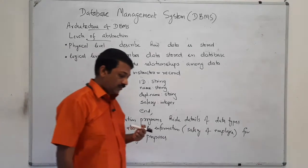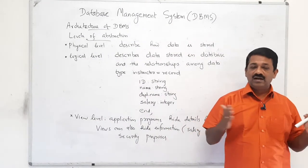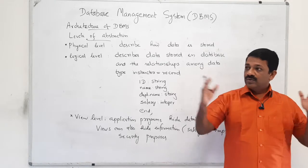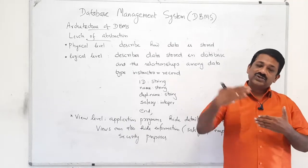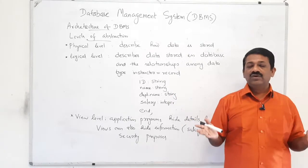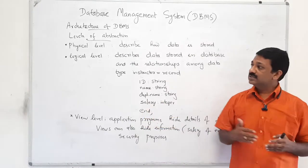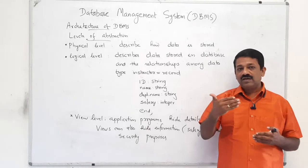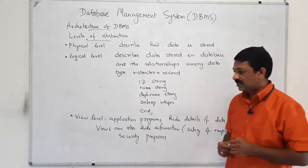At the physical level, the database is actually physically stored in a secondary storage device like a hard disk. The physical level decides what structure or what utilities to use when physically storing the data. The programmer who writes a program does not need to know how the data is stored in the secondary storage device.